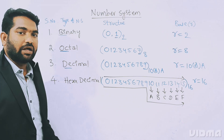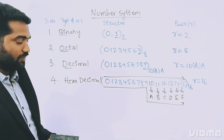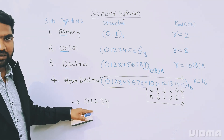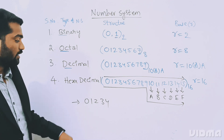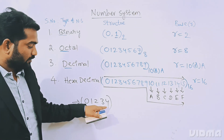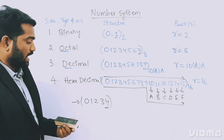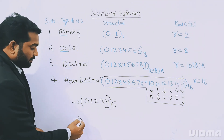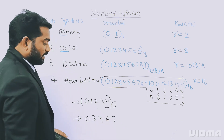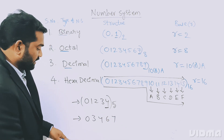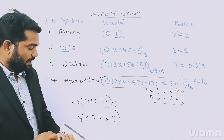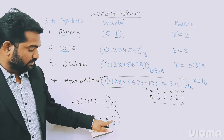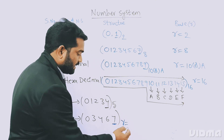If someone asks you in an exam — given the digit set 0, 1, 2, 3, 4 — what is the radix? The maximum value is 4, so the base must be greater than 4, meaning radix equals 5. Another example: given digits 0, 3, 4, 6, 7 — the maximum value is 7, so base or radix equals 8.